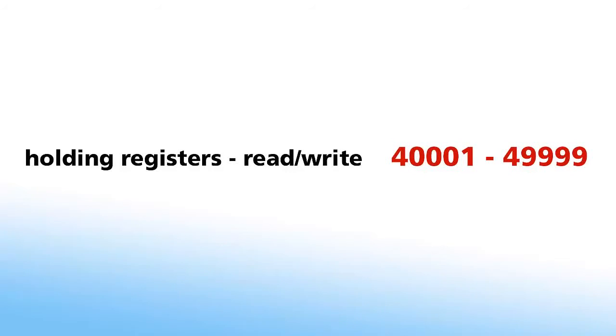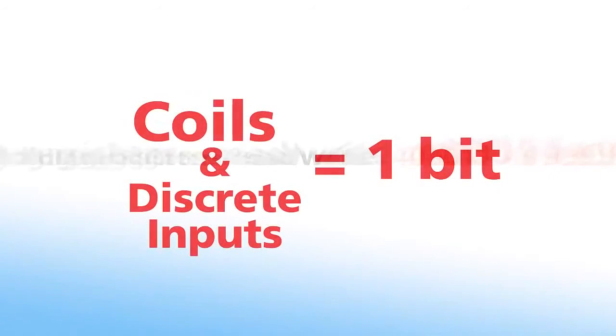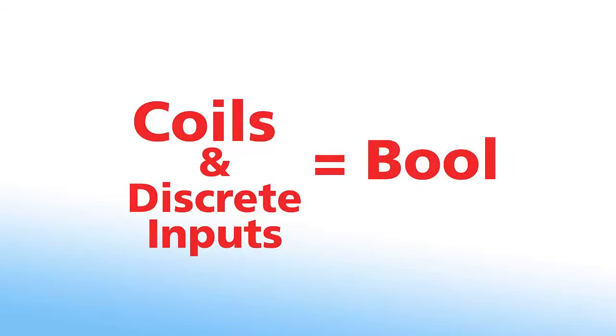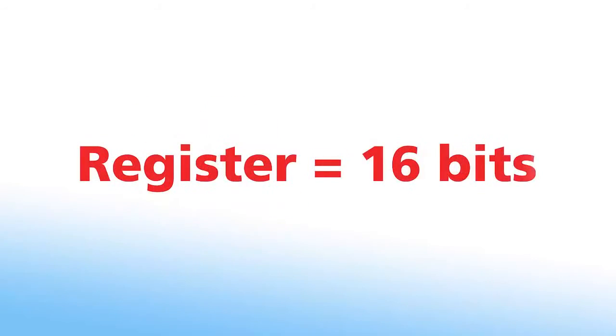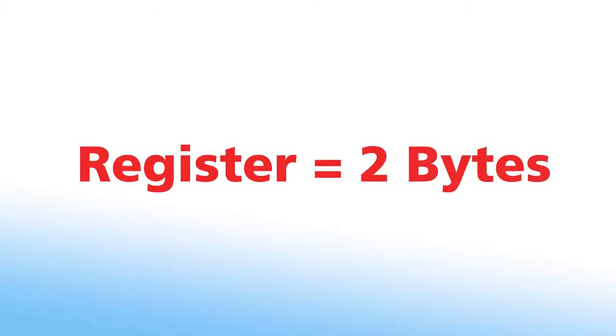At this point, it might be helpful to explain the terms used for data types in Modbus. Coils and discrete inputs are the Modbus vernacular for one bit of data or, in Rockwell terms, a bool - basically on or off. A register is the term for one word or 16 bits or two bytes of data or, in Rockwell terms, an int.